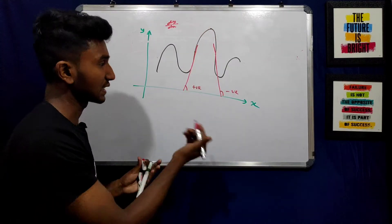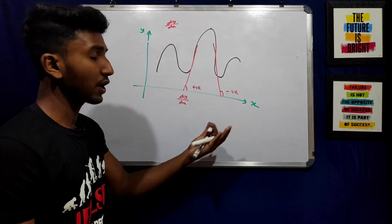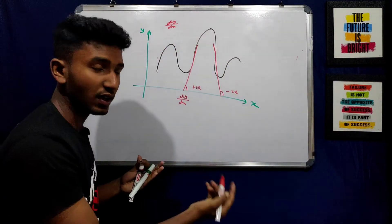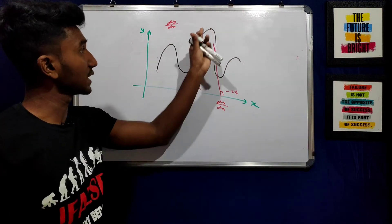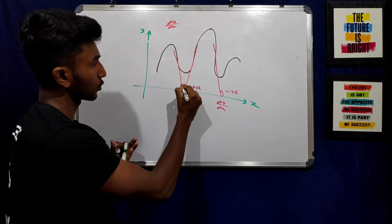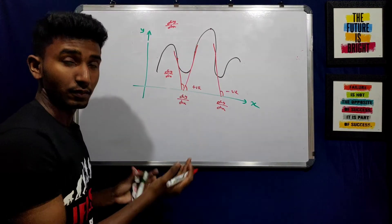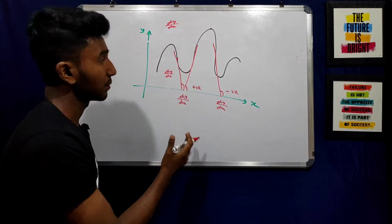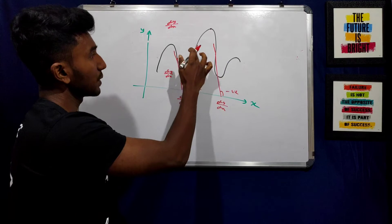From the maximum point, we can use the concept of the first derivative sign change. At a maximum point, the left-side derivative is positive and the right-side derivative is negative. At a minimum point (the minima pointer), the left-side derivative is negative and the right-side derivative is positive.